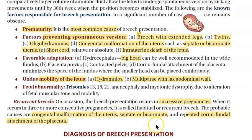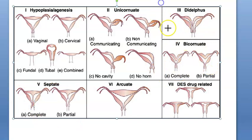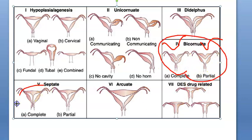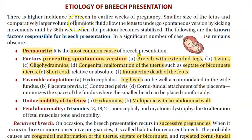Let's understand what a septate or bicornuate uterus is. In a septate uterus, you can clearly see a septum in the middle. A bicornuate uterus has a distinct shape at the fundus. People who have this type of uterus are more prone to breech presentation. So in this video, we have looked at the causes of breech presentation, and we'll continue in the next video with the diagnosis of breech presentation.